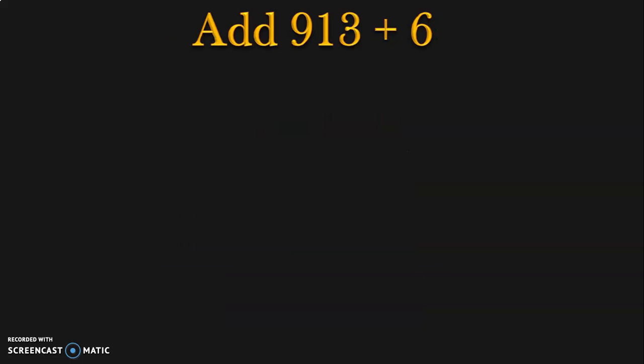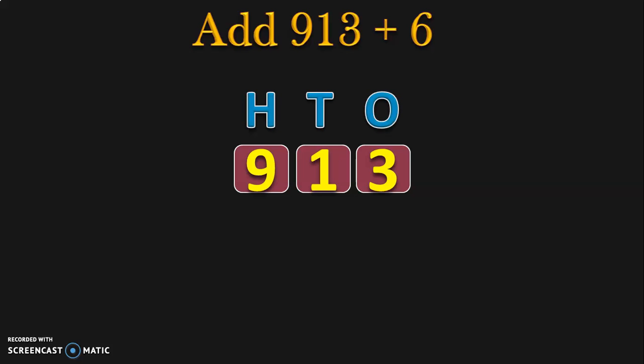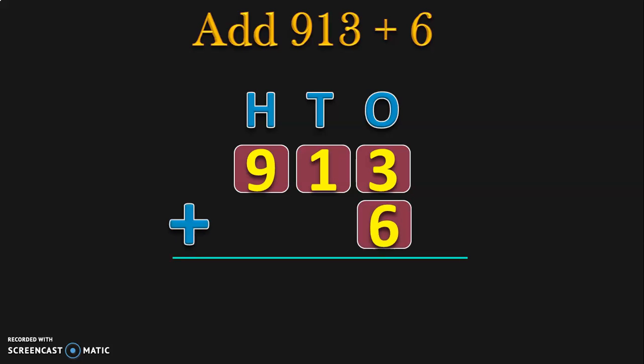Let us do the next example: add 913, which is a three-digit number, with 6, which is a single-digit number. First, write down the three-digit number and its place values — 1s, 10s, and 100s. I always suggest writing the digit with the maximum place value first. In addition, it is best to write the number with the highest place value first, then write down the remaining numbers in their correct places. If you write 6 in the 10s or 100s place, the addition will be wrong — that is why writing place values first is so important.